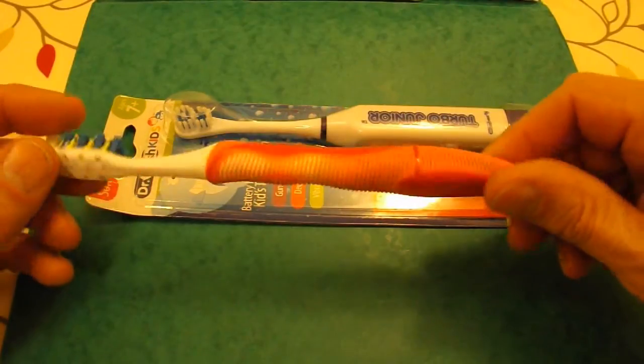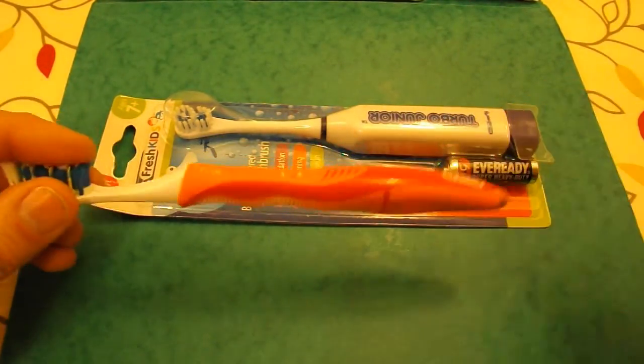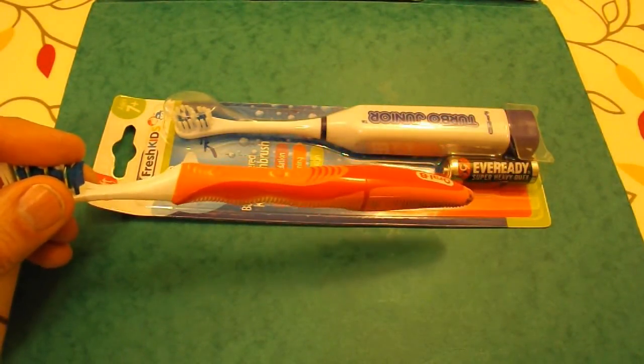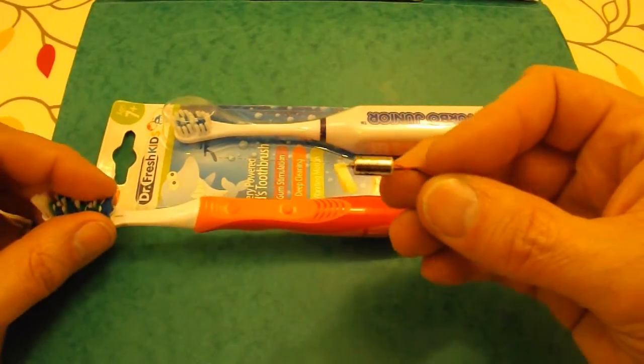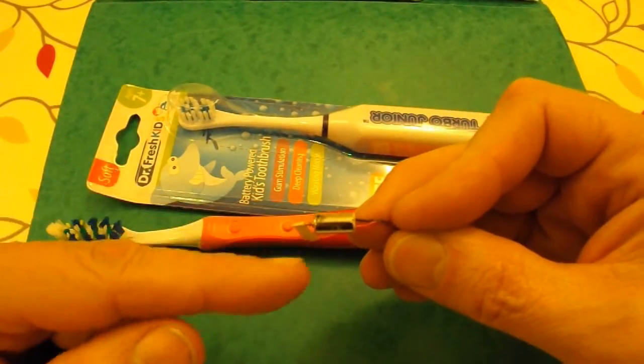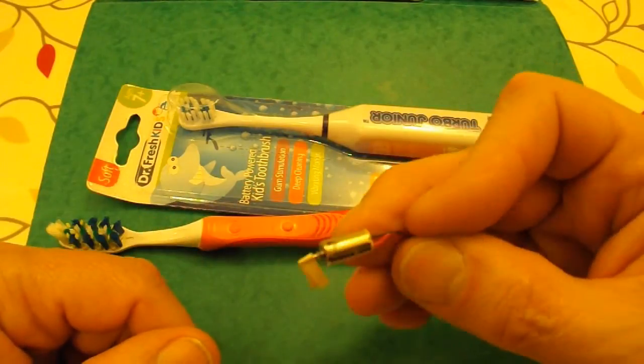This one's called an Oral-B Pulsar and it has a small motor in it that looks like this. Well, without a bit of plastic on it, but it looks like that.